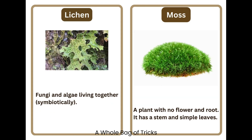Lichen. Fungi and algae living together. Moss. A plant with no flower and root. It has a stem and simple leaves.